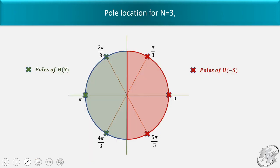The figure shows the pole locations. Red color indicates the right-hand side of the s-plane and green color indicates the left-hand side, which gives the stable system. So we take the poles of H(s) on the left-hand side. We can see that we have pole locations at 0 angle and at π angle, meaning exactly at +1 and -1.